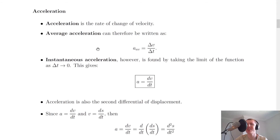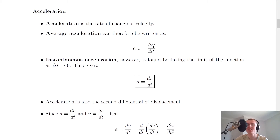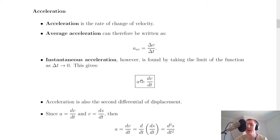Moving on to acceleration now. Acceleration is defined as the rate of change of velocity — rate of change again meaning with respect to time. So another way of saying this is the change in velocity per unit time, or the change in velocity each second. Average acceleration could be written as ā equals Δv over Δt, or average acceleration equals the change in velocity over the change in time. This is just what we used in national 5 and higher physics to calculate acceleration. Instantaneous acceleration is found by taking the limit of the function as Δt tends to zero — just like we did for instantaneous velocity — so the instantaneous acceleration a equals dv/dt.